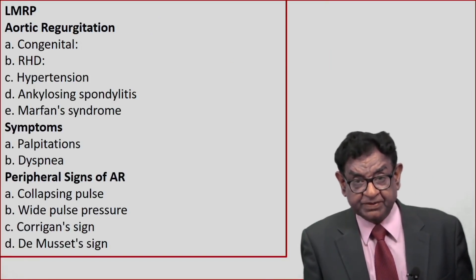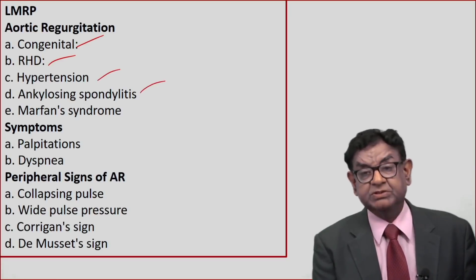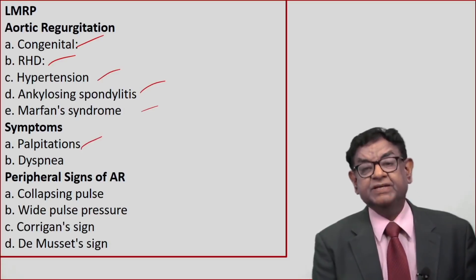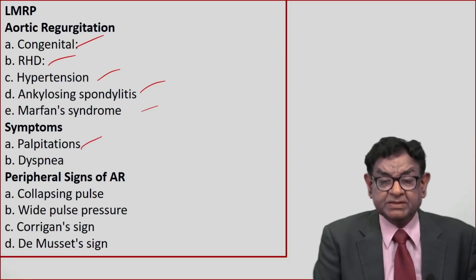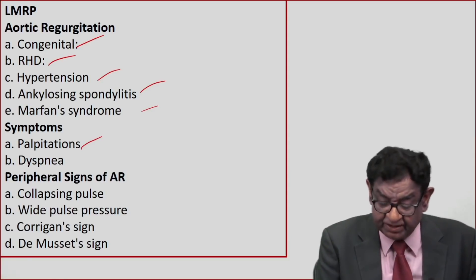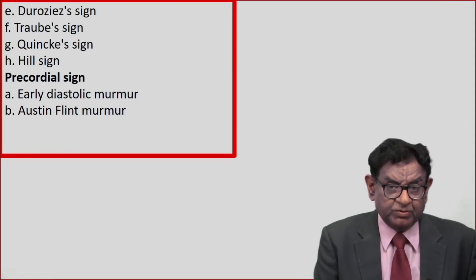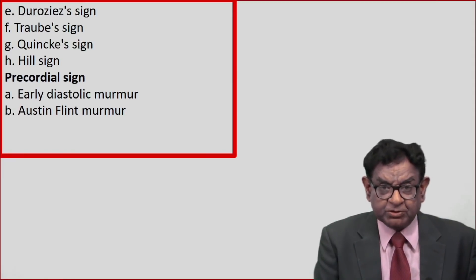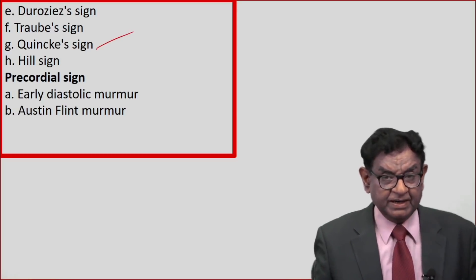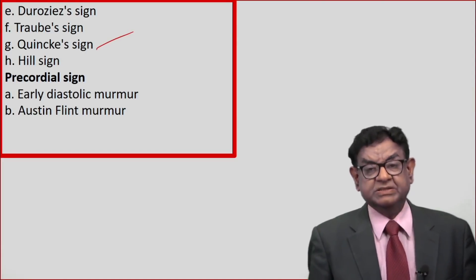Quick recap of AR: causes include congenital, RHD (most common), hypertension, ankylosing spondylitis, Marfan syndrome. Main symptom is palpitation. Peripheral signs: collapsing pulse (Corrigan's pulse), wide pulse pressure, Corrigan's sign (dancing carotid), De Musset's sign (head nodding), Duroziez's sign (to-and-fro murmur over femoral artery), Traube's sign (pistol shots over femoral artery), Quincke's sign (capillary pulsation over nail bed), and Hill's sign (systolic BP difference upper and lower limb). Precordial signs: early diastolic murmur and Austin Flint murmur. Thank you for watching.